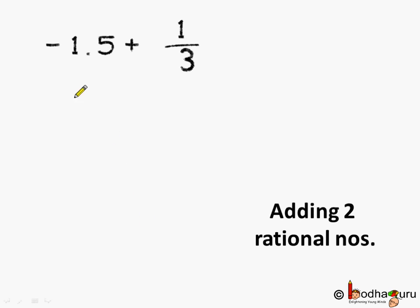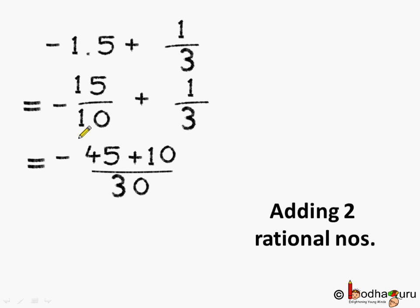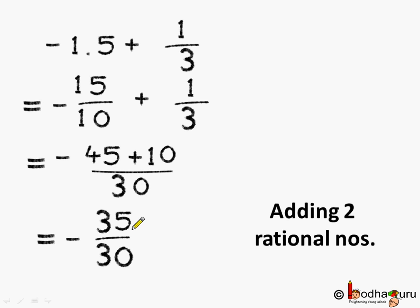Let's add 2 rational numbers: minus 1.5 plus 1 by 3. Here 1.5 can be written as 15 by 10, and putting the minus sign we get minus 15 by 10 plus 1 by 3. Now 30 is the LCM. Minus 15 multiplied by 3 gives minus 45, and 10 multiplied by 1 gives 10. So it becomes minus 45 plus 10 divided by 30, and the answer becomes minus 35 by 30.